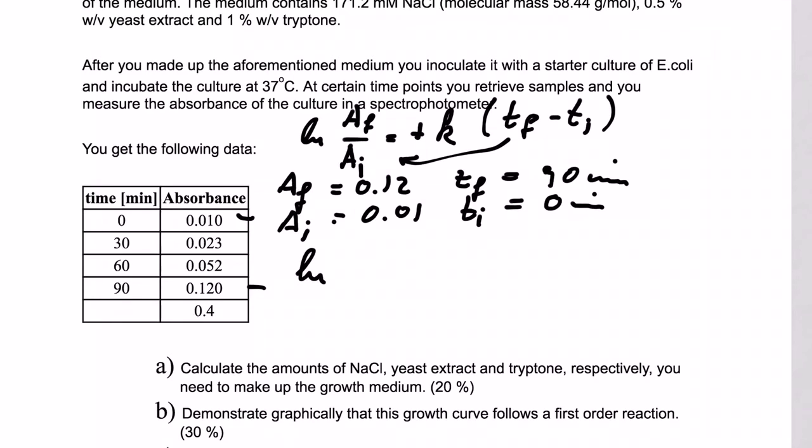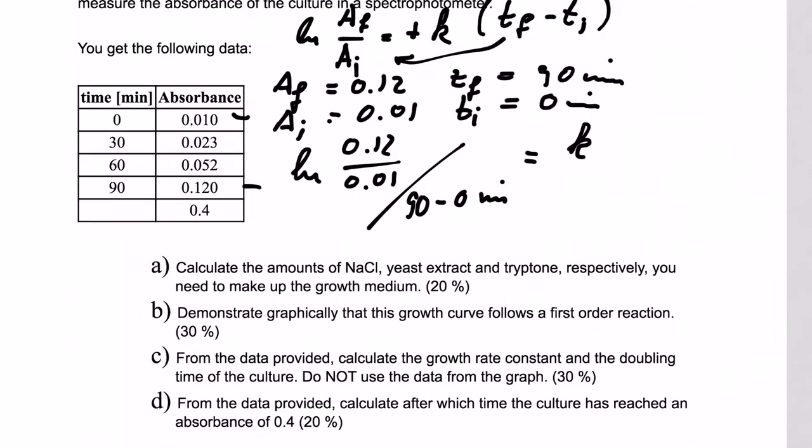So we have ln of 0.12 divided by 0.01, and divided by t final, that's 90 minus 0 minutes, and that gives us k. And when we calculate that, that gives us ln 12 divided by 90, and that gives us roughly 0.028, and the unit for that is minute to the minus 1. So that's quite important. That is our rate constant.